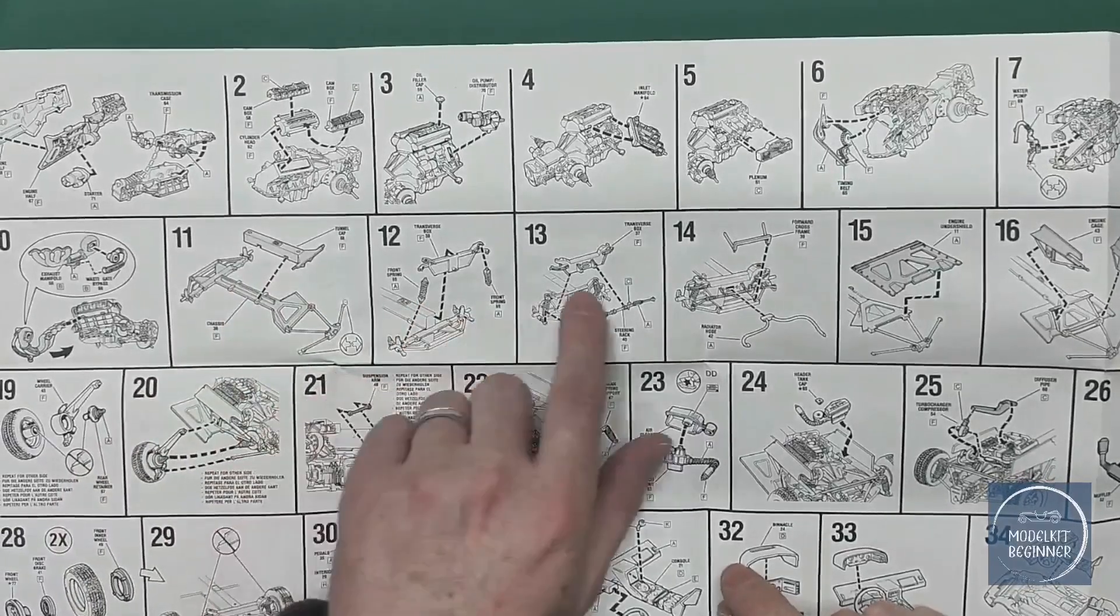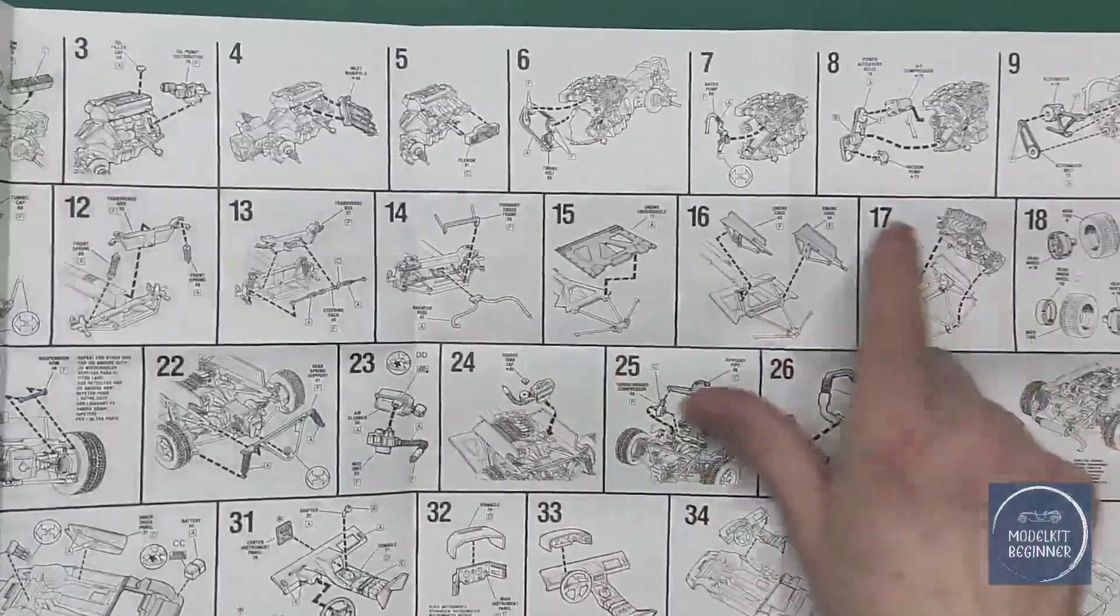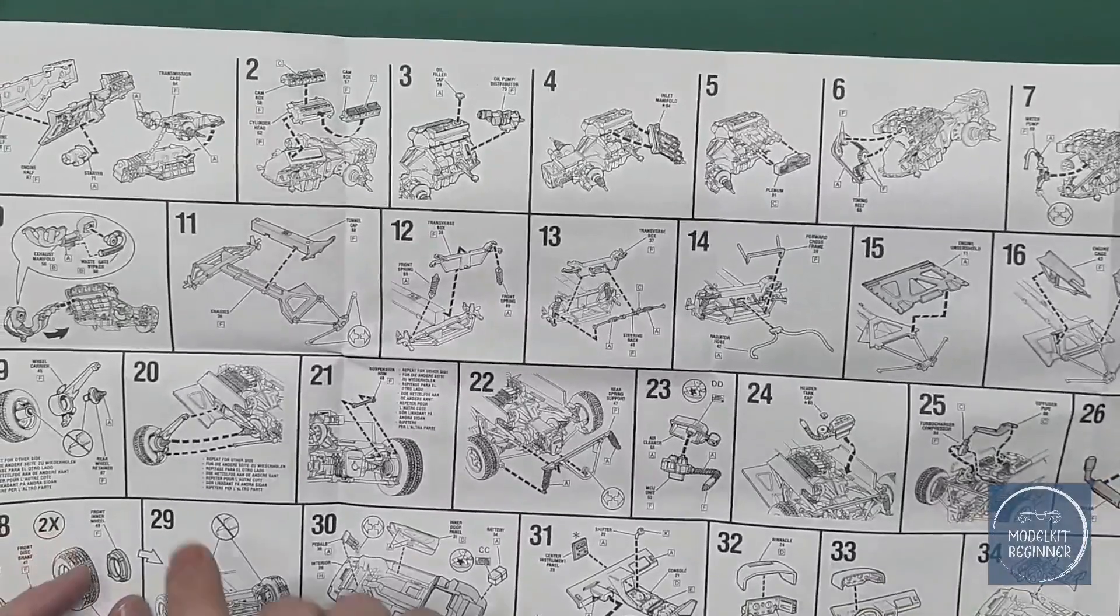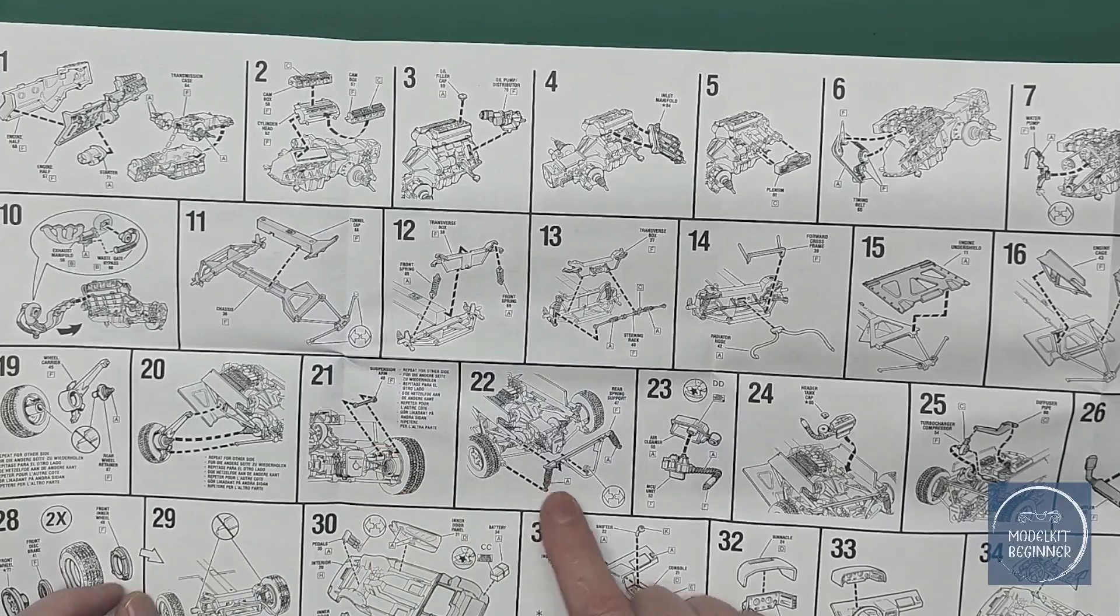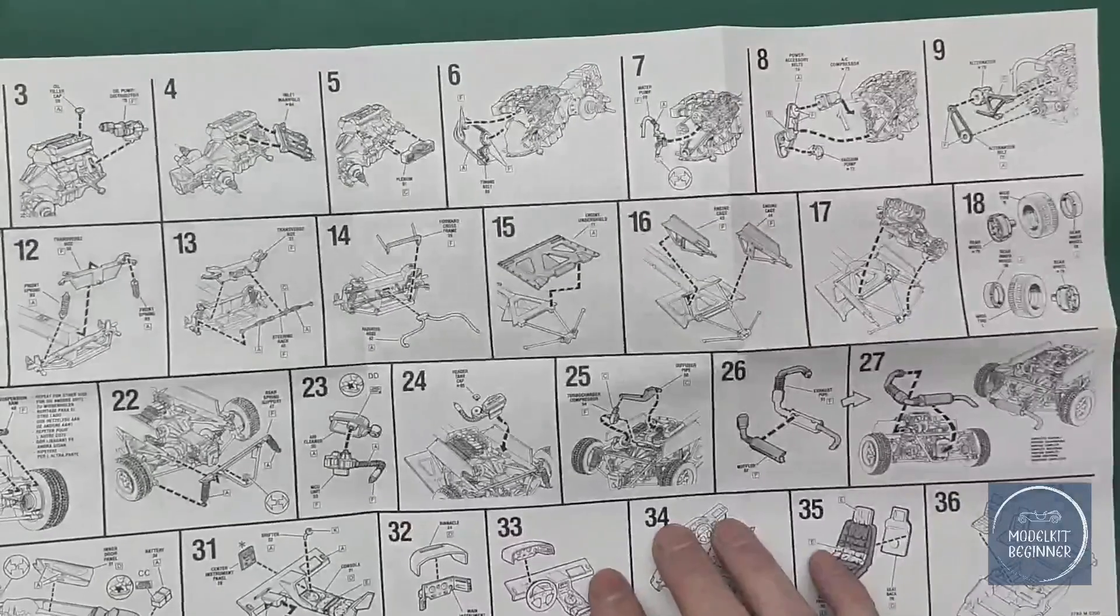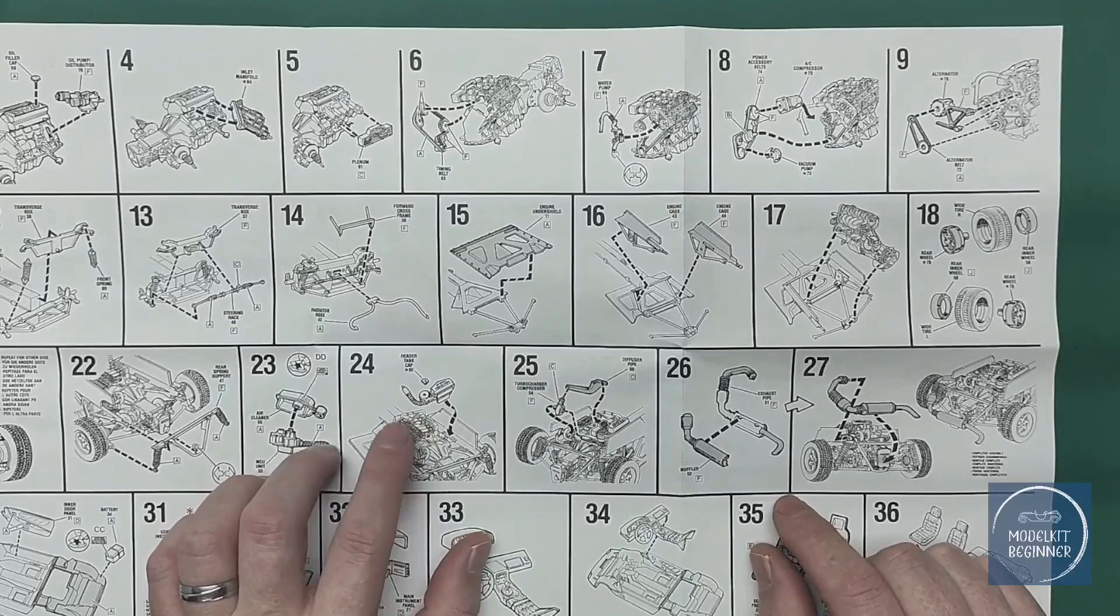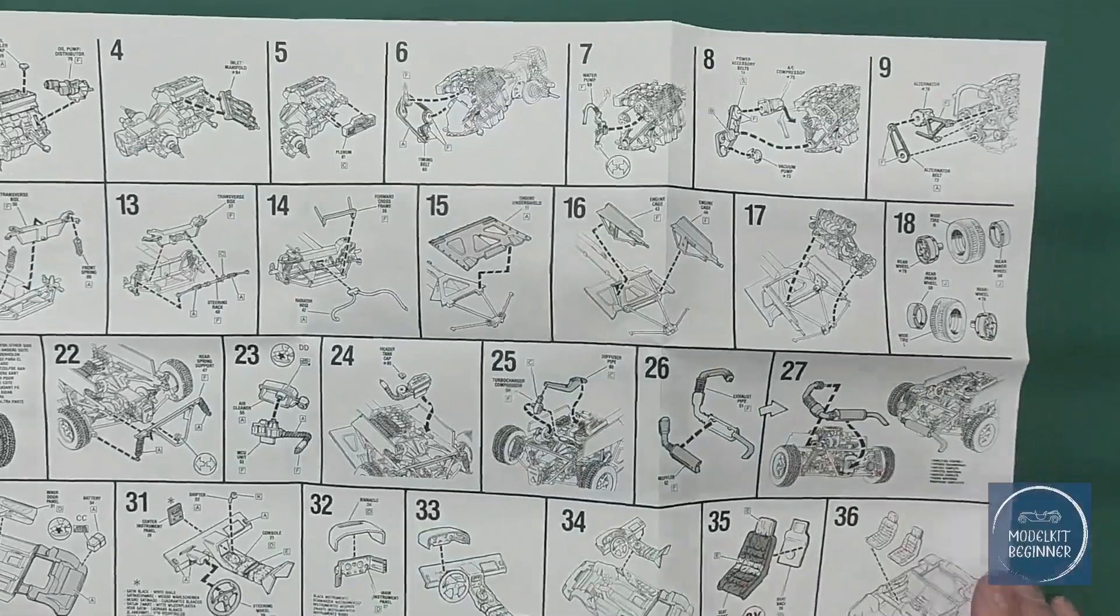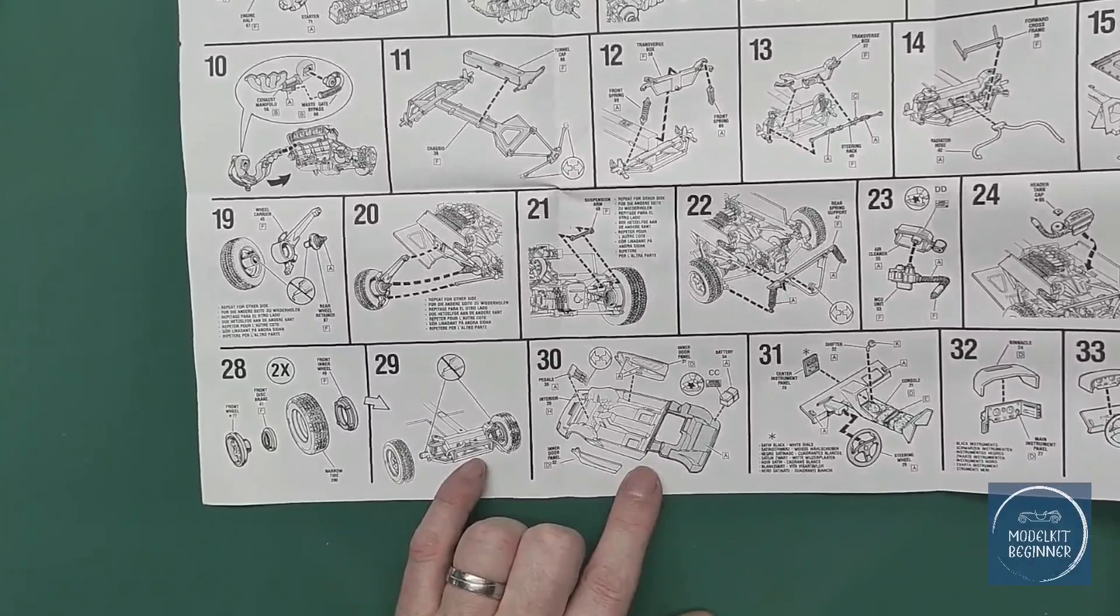Then we move to the wheels, wheel carriers, suspension arms, air cleaner, header tank cap, diffuser pipes, exhaust pipes—how everything gets together. It actually looks quite interesting and intricate. It's not just a couple of parts thrown together for sure.